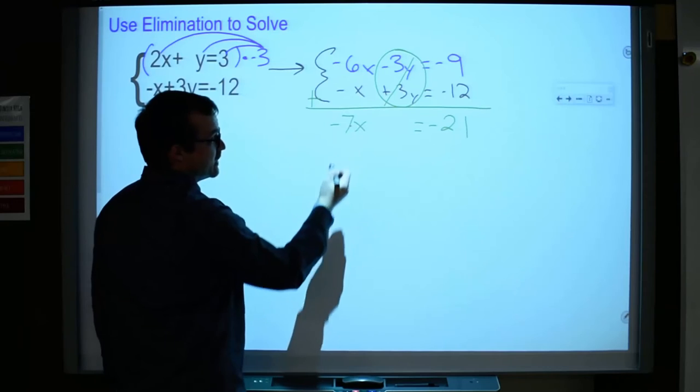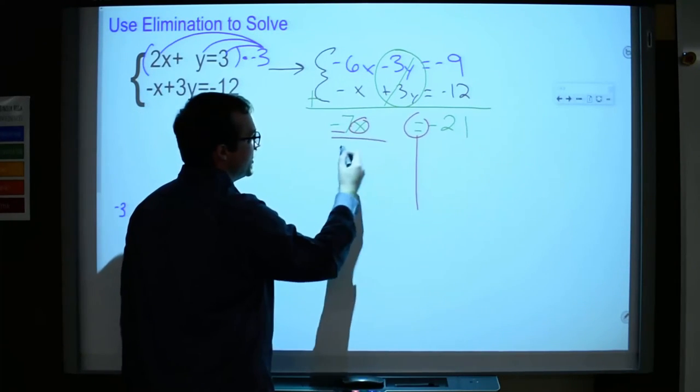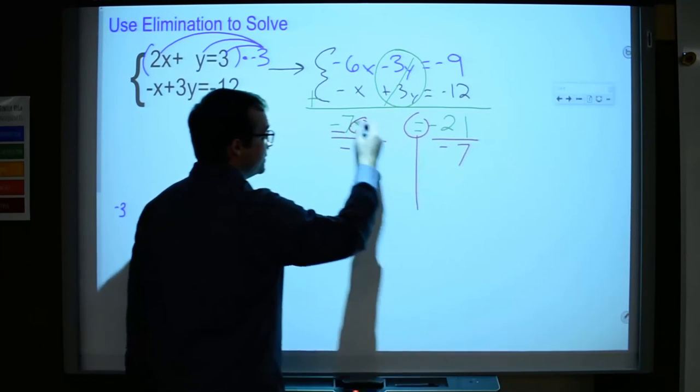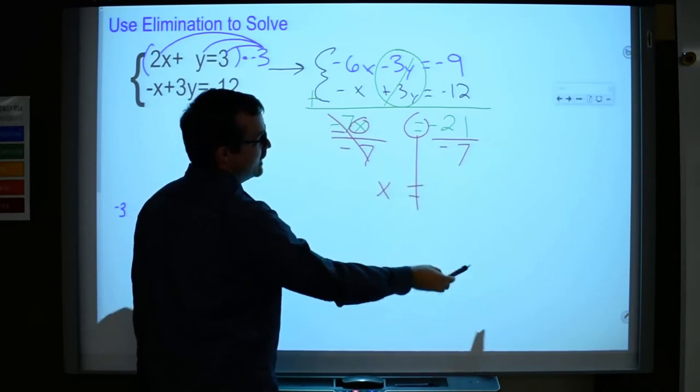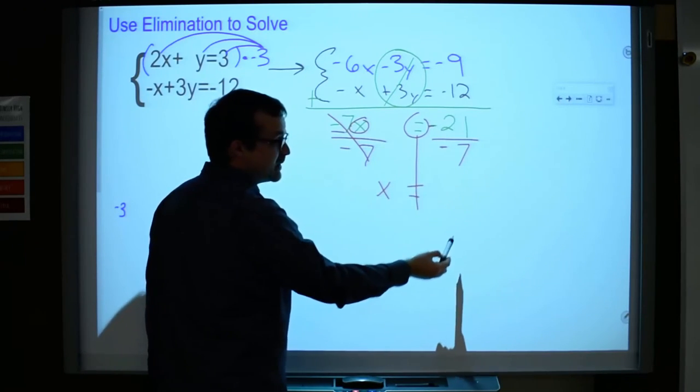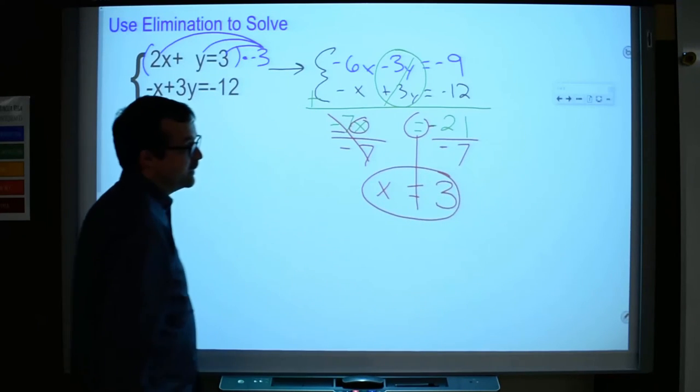It's pretty easy. That's just the coefficient there. To get x alone, we need to get rid of that. So we're going to divide both sides by a negative 7. Negative 7 divided by negative 7 is 1, so I'm left with 1x. A negative divided by negative is positive, and 21 divided by 7 is 3. So positive 3. So I'm done, right? No.